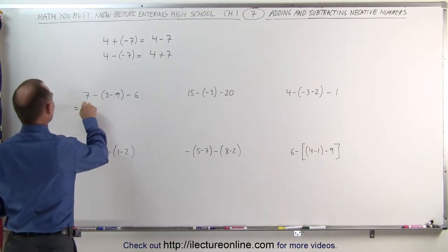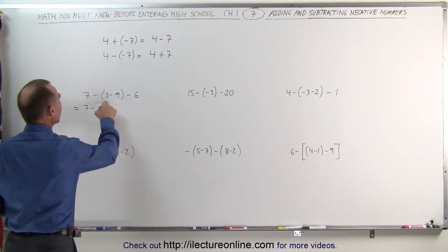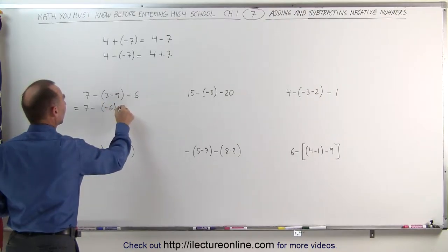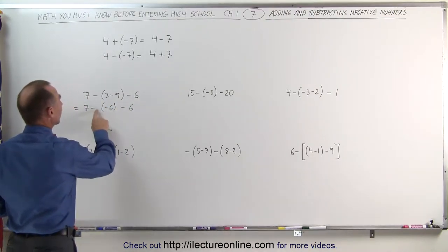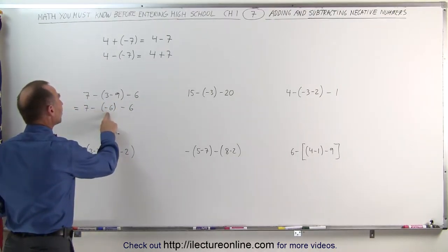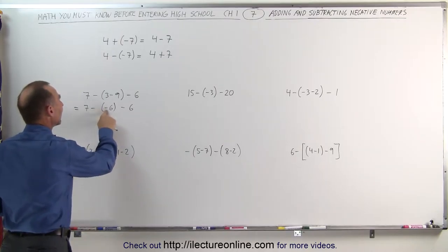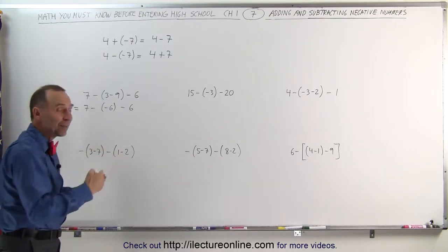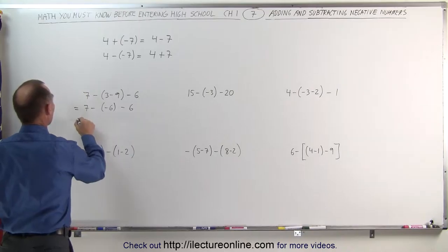Using those rules, let's do the following examples. We need to follow the order of operations — we want to work the parentheses first, from the inside to the outside. This can now be written as 7 minus 3 minus 9, which gives minus 6.